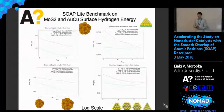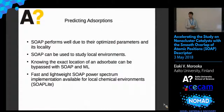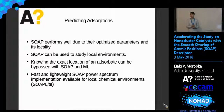A question was asked about how SOAP accounts for differences in atom types. The implementation accounts for different atom types by splitting the power spectrum into different atom-type contributions. So for example, you have one power spectrum for type AA and one for type AB — same types and different types — which can also be crossed over.